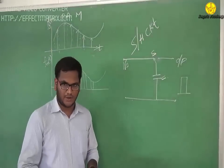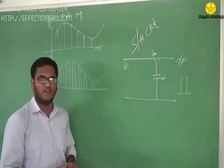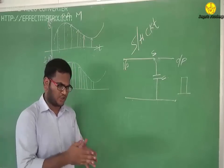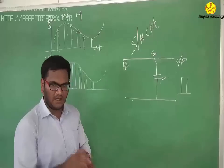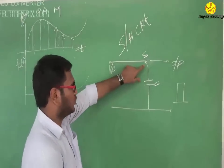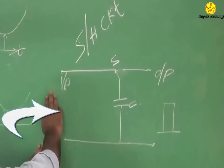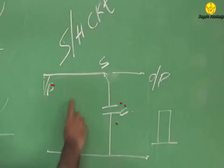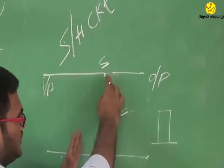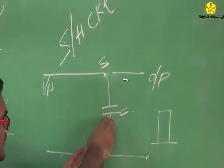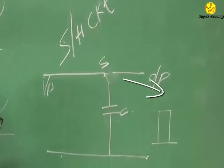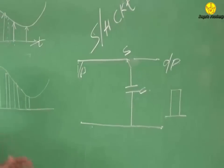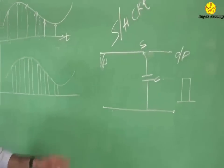To overcome the disadvantages of natural sampling, we go for flat top sampling. In flat top sampling, the baseband signal is made to pass through a simple sample-and-hold circuit, which is essentially a switch and a capacitor. When the baseband signal is sampled and fed to the input, the capacitor gets charged, and when the switch is flipped to the output, the capacitor starts to discharge, resulting in a constant amplitude pulse.